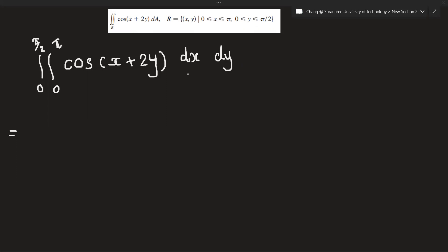So it's your choice whether you integrate with x first or y first is your choice. According to Fubini's theorem, the results would be the same. So for me, I would integrate with x first. Okay, so 0 to pi over 2.